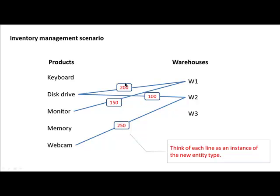Think about it. The first line here between disk drive and warehouse one — what does it represent? It represents the fact that we are storing 200 disk drives in warehouse one. This represents the fact that we are storing 150 monitors in warehouse one. What is each of those lines really an instance of? We can think of this as being an instance of an entity type called stock. We are keeping the stock of this product in that warehouse. The quantity is the attribute.